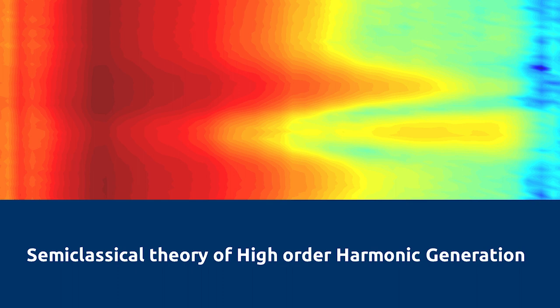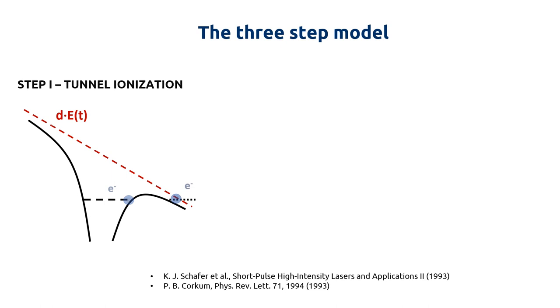In order to explain this process, we can consider the simple three-step model, as developed by Schafer and Corkum. In the first step, the Coulomb potential of the atomic target is bent by the external field, so that the outermost electron can escape under the barrier, tunnel ionizing the system.